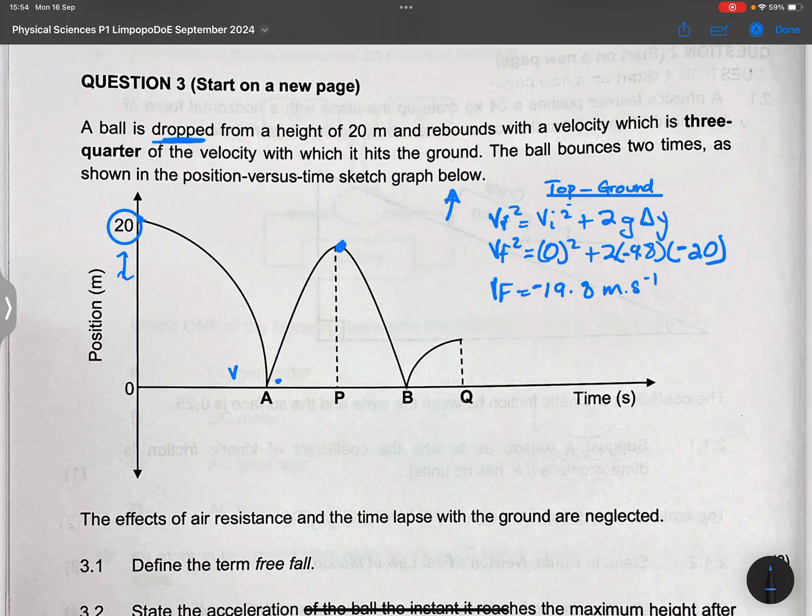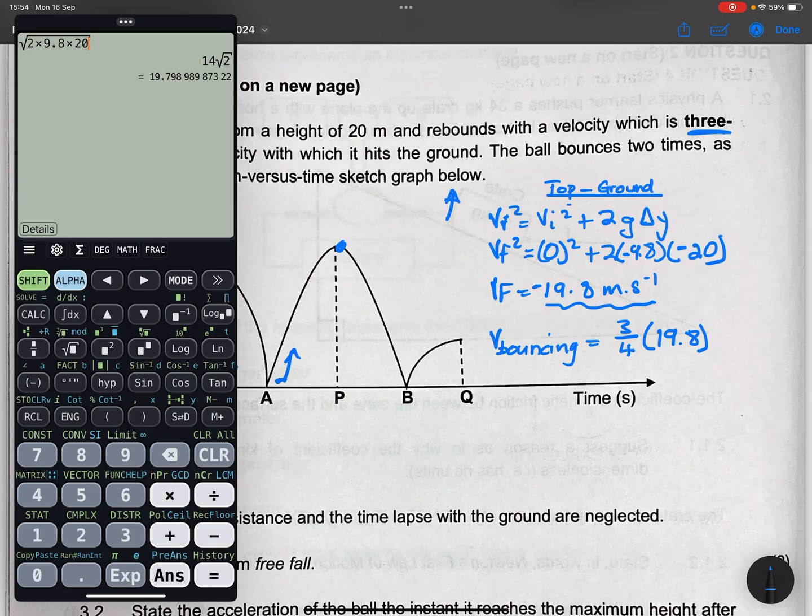However, now I want the velocity with which it bounced back. They said to me, it is three quarters. So the velocity of bouncing would be three quarters of the velocity that it landed on the ground with. That's three quarters of 19.8. So that's going to be 14.85 meters per second.